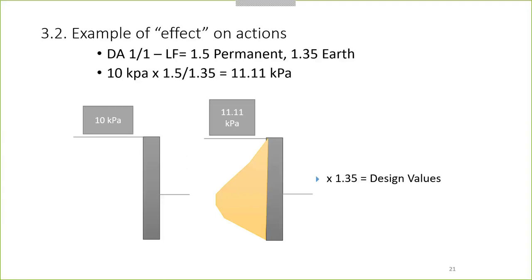Another example of standardizing the analysis: if we have a load factor of 1.5 for permanent and 1.35 for earth, and a 10 kPa load, we adjust the 10 kPa to 1.5 divided by 1.35 — that's the equivalent load we run in the analysis. We run the analysis with SLS, and at the end we multiply by 1.35.